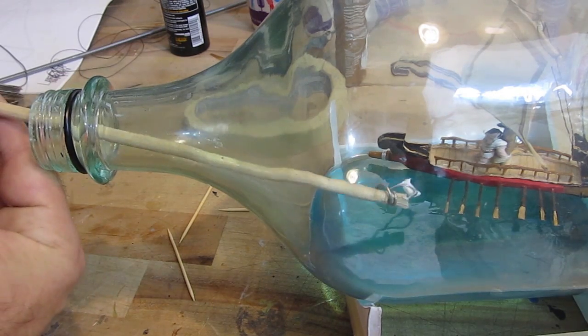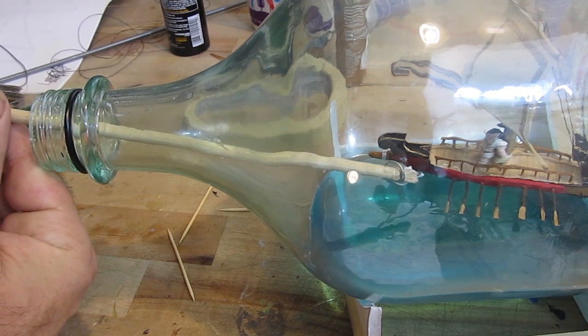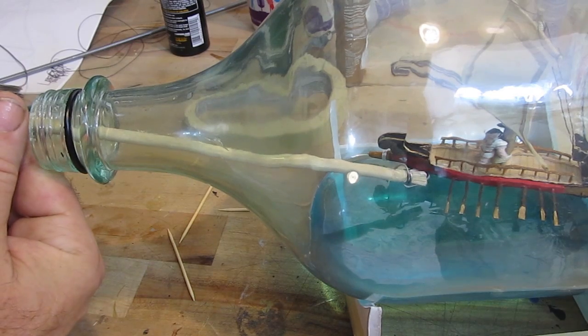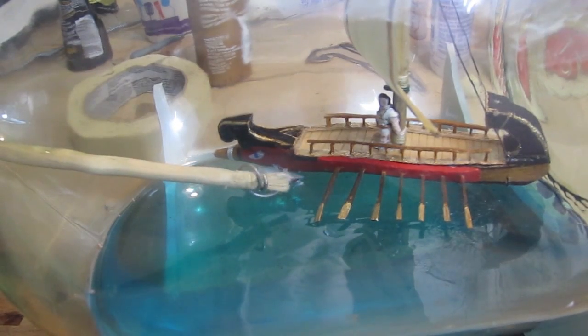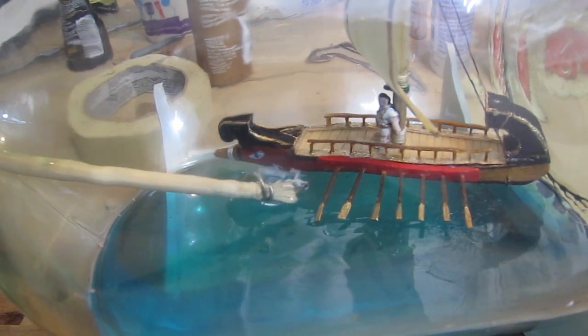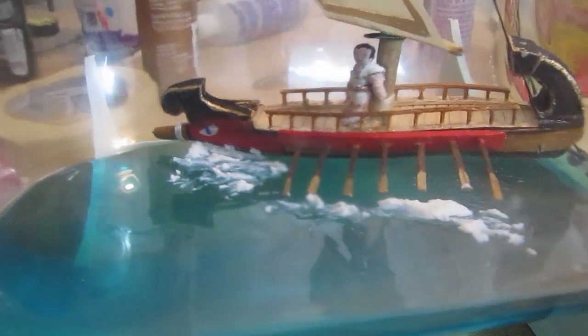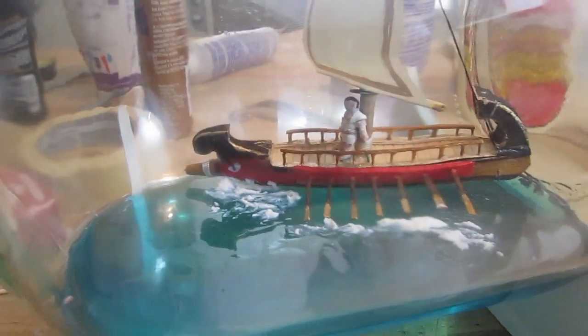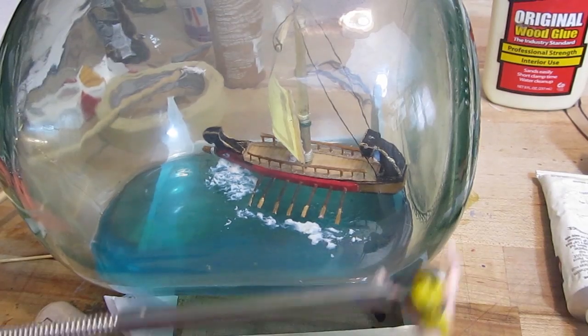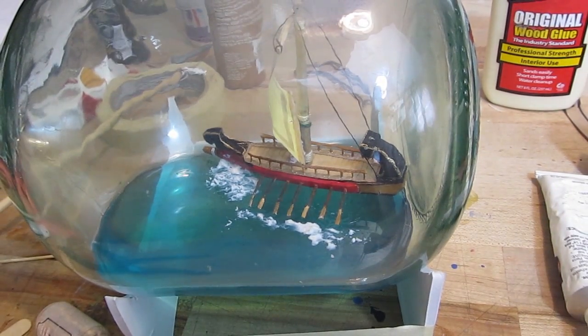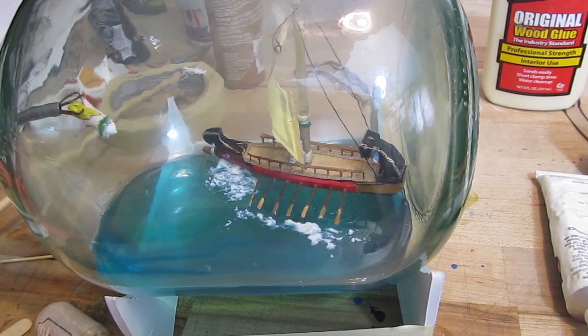So now we tinker with the water, adding waves, and that's a heavy gloss gel. And what that does is, however you put it, you dab it on, and it forms like a wave. It'll dry that way. It won't settle like the water did. It won't get flat. It'll stay bumpy, which is nice. So yeah, so the oar is making a stir in the water in the front of the ship. So let's finish this thing off.